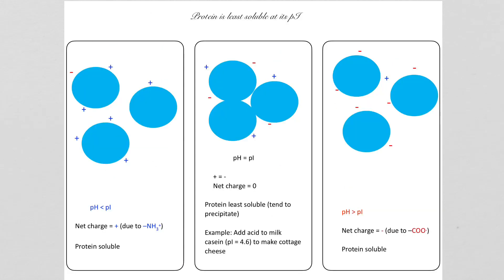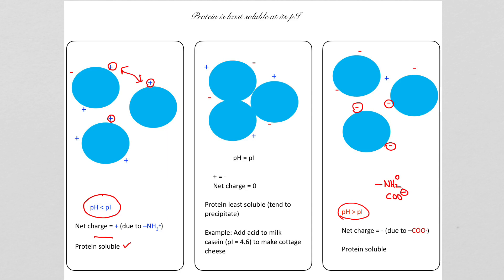Before we look at the clinical applications of PI, here is an important concept: when the pH of the medium is less than the PI of the protein, the protein tends to have a net positive charge. The positive charges repel one another and the protein is more soluble. Similarly, when the pH is greater than PI, the carboxyl groups become COO⁻ and amine groups become unprotonated NH₂ with zero charge — the many negative charges cause repulsion and the protein is also more soluble.